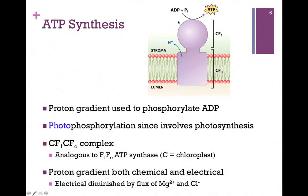Again, we have a proton gradient that's both chemical and electrical. In chloroplasts, there is a flux of ions, particularly magnesium and chloride ions, and that tends to diminish the electrical portion of that gradient. We still have the concentration gradient of protons, but the charge difference isn't quite as great.